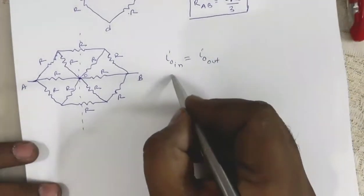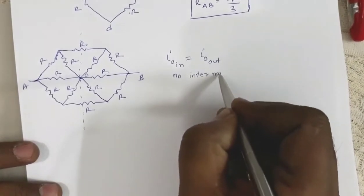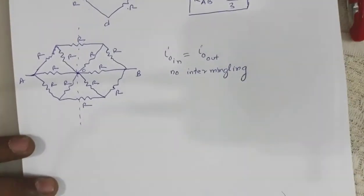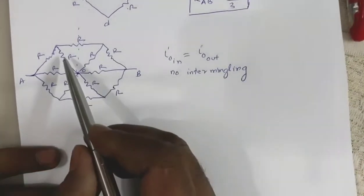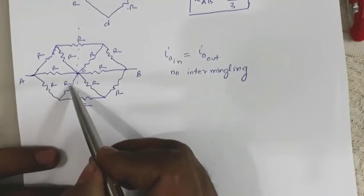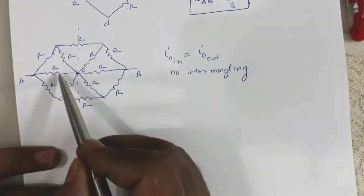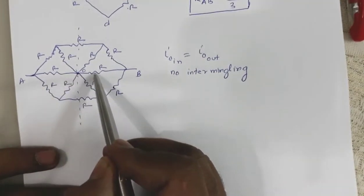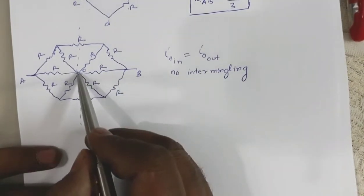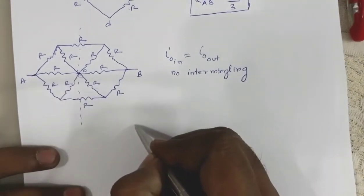That means I_O incoming at point O equals I_O outgoing. So there must be no intermingling of current. If there is no intermingling, the current coming from one path will go in that same path. Since there is no intermingling, I can lift this part and similarly lift this part, and redraw the circuit.